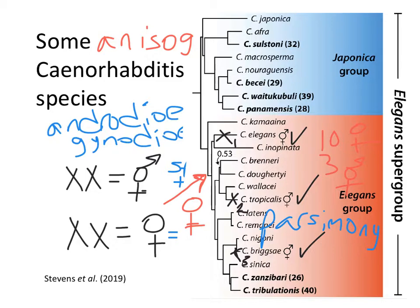This is the quintessential natural experiment that gets evo-devo biologists really excited, because we've had the same trait — the same developmental trait, the development of what gametes you produce — evolve three different times in closely related species. This lets us ask: is there more than one gene responsible? How many different mutations does it take to make a female become a hermaphrodite? And is it the same mutations in the three different species, or does evolution find different mutations?